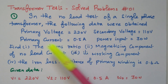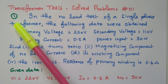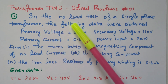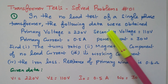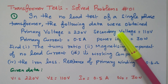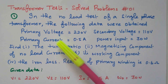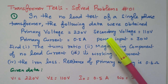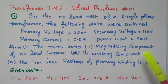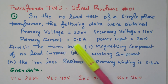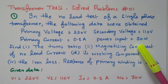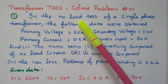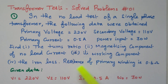Now we will go to the problem. First we will see problem 1. In the no-load test of a single phase transformer, the following data were obtained: primary voltage is 220 volts, secondary voltage is 110 volts, primary current is 0.5 ampere, primary power input is 30 watts. This data belongs to the no-load test.